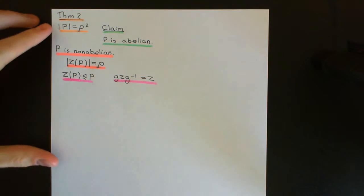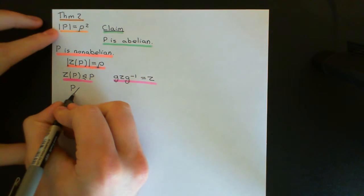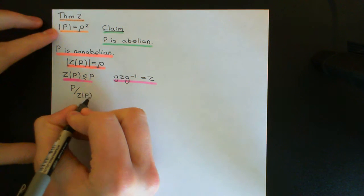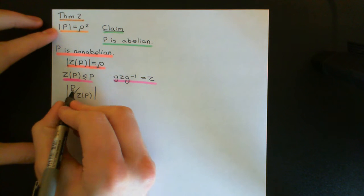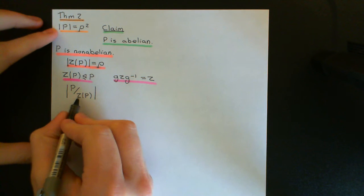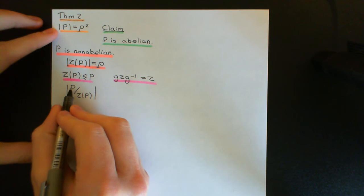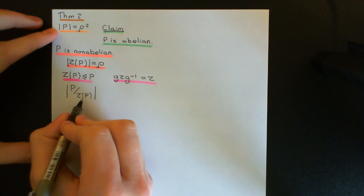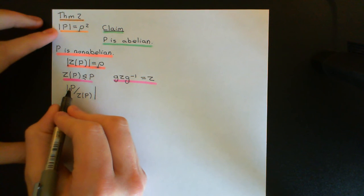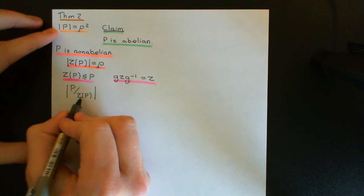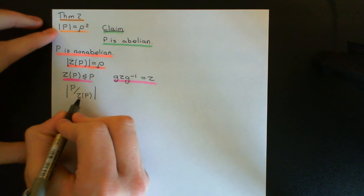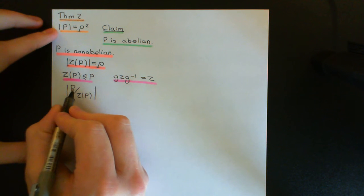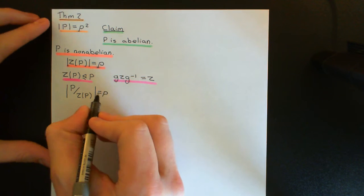Since the centre is a normal subgroup, we can quotient P by the centre. The quotient group P/Z(P) has order equal to the index of the centre in P. The entire group has order P squared and the centre has order P, so dividing gives the quotient group order equal to P.